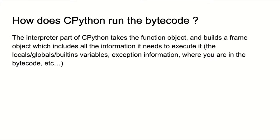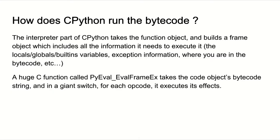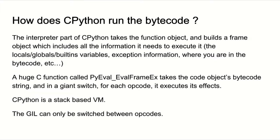The interpreter part of CPython takes the function object and builds a frame object, which includes all information needed to execute the function: locals, globals, built-in variables, exception information, and where exactly it's currently running inside the bytecode. There's a huge function in CPython source called PyEvalEvalFrameEx, which takes the code object string and has a giant switch with all the opcodes, executing each one's effect. Importantly, CPython's virtual machine is stack-based, not register-based. The global interpreter lock can only be switched between opcodes, not while a thread is mid-execution.